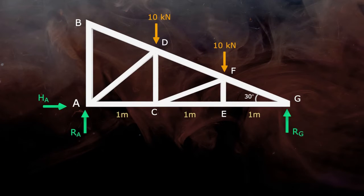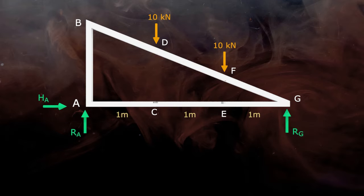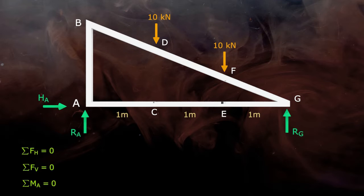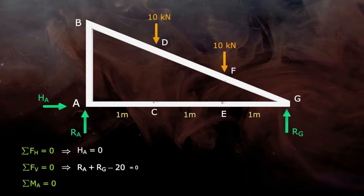Now consider the free body diagram of the truss as a whole. For this, consider only the external forces and reactions and ignore the forces acting on members. There are 3 equilibrium equations available to find out reactions. The first equation is: summation of all horizontal forces equals 0. So Ha equals 0 because there is no other horizontal force acting on the truss. Now sigma Fv equals 0: forces in the upward direction are positive, so Ra plus Rg minus 20 equals 0. We don't know the value of Ra or Rg yet, so move to the next condition.